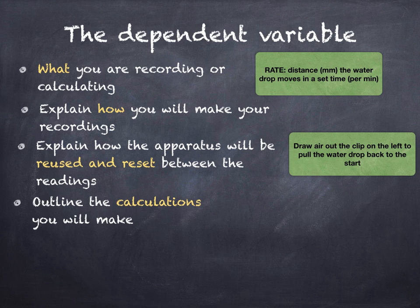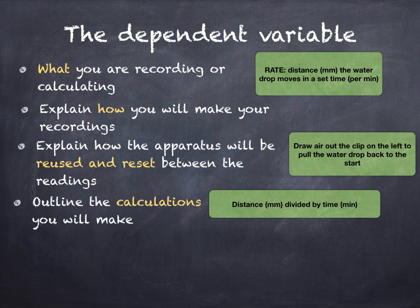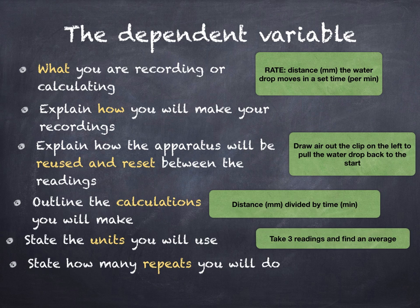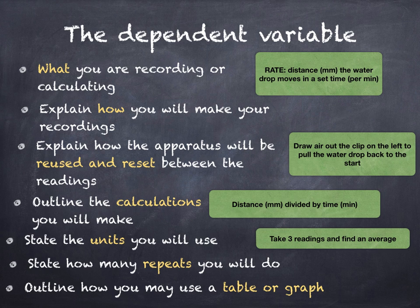You need to outline the calculations that you will make. For example, distance in millimeters divided by time in minutes. State the units that you will use and how many repeats that you will do. So usually you take three readings and then find an average. And lastly, you need to outline how you may use a table or graph.